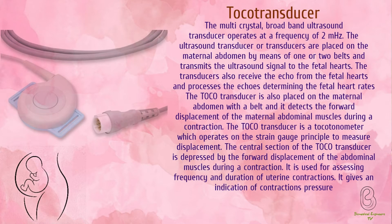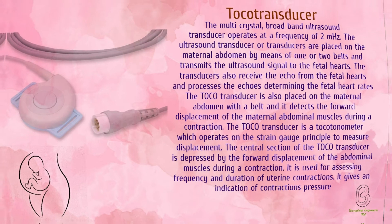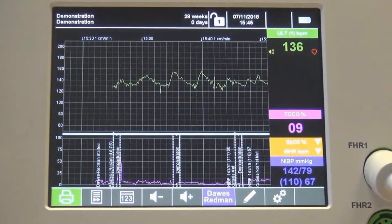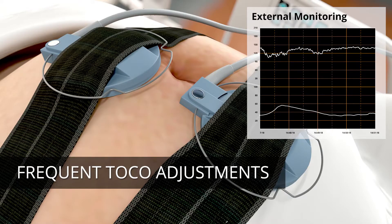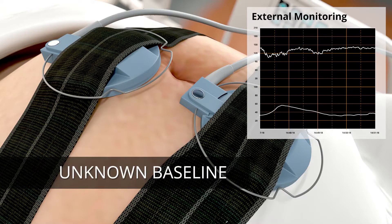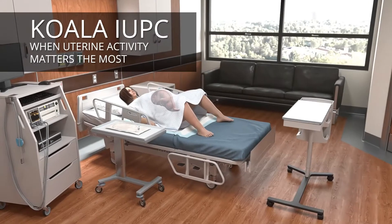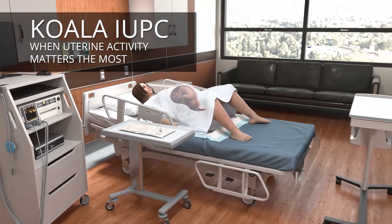The external contraction monitor can't tell how strong a contraction is, since the size of the hill is affected by the tightness of the belt and if you are thin or heavy. If a precise measurement of the strength of the contraction is needed, an internal pressure monitor can be placed inside the uterus.